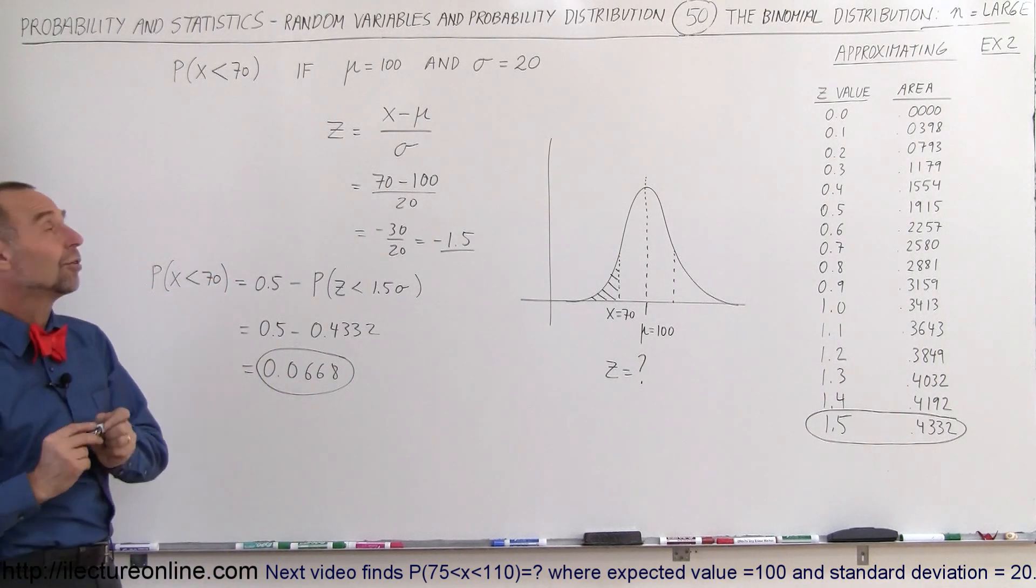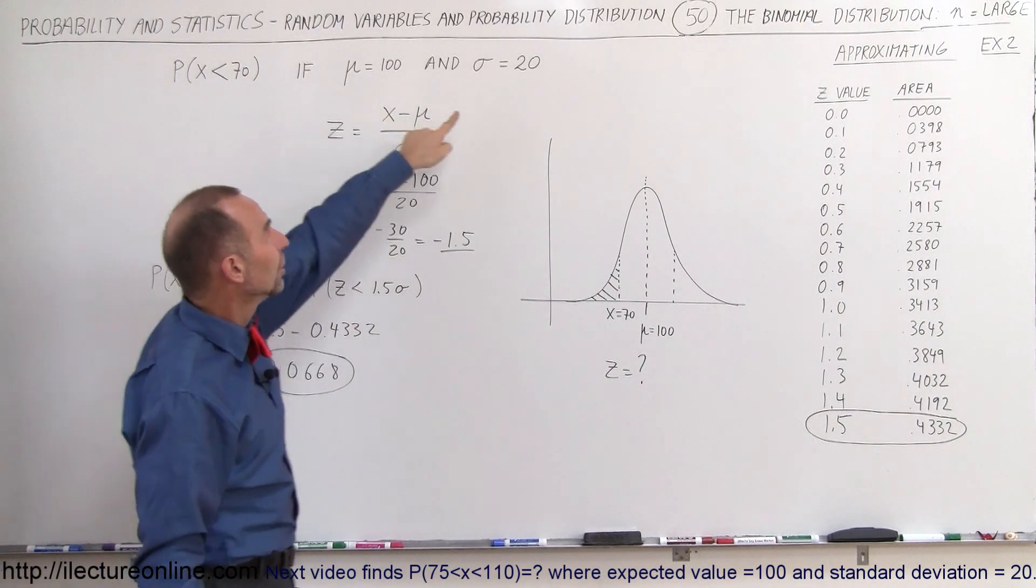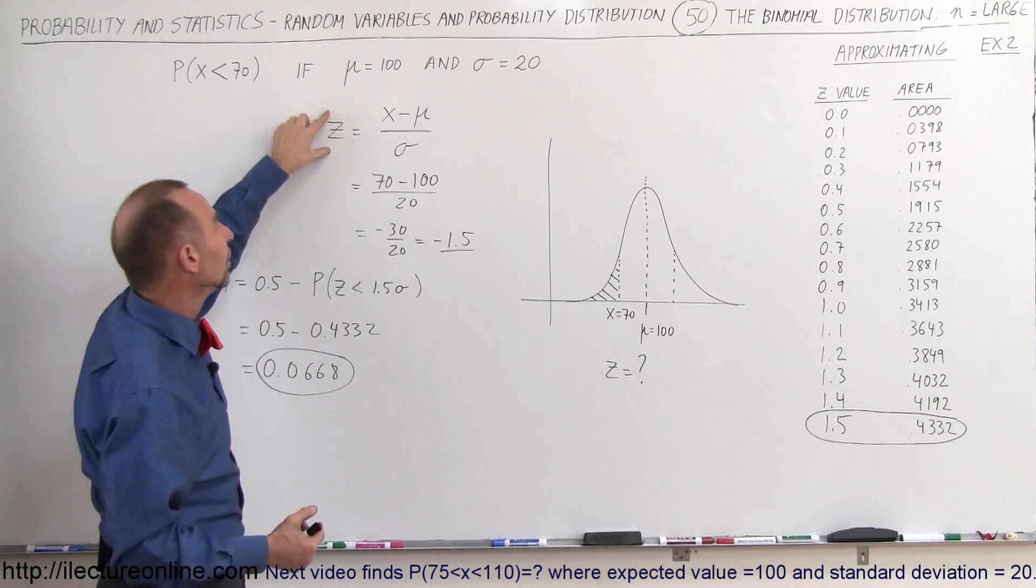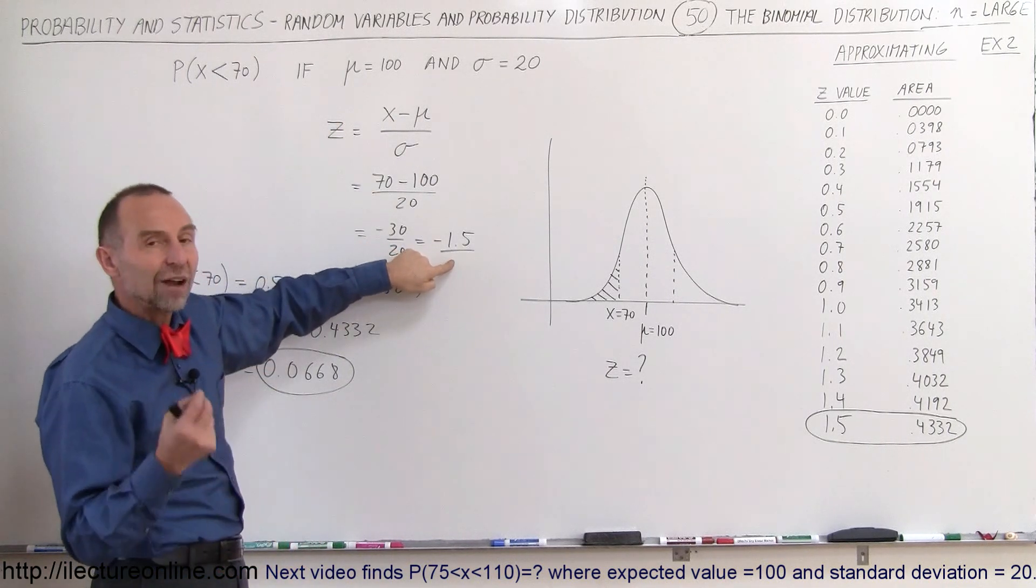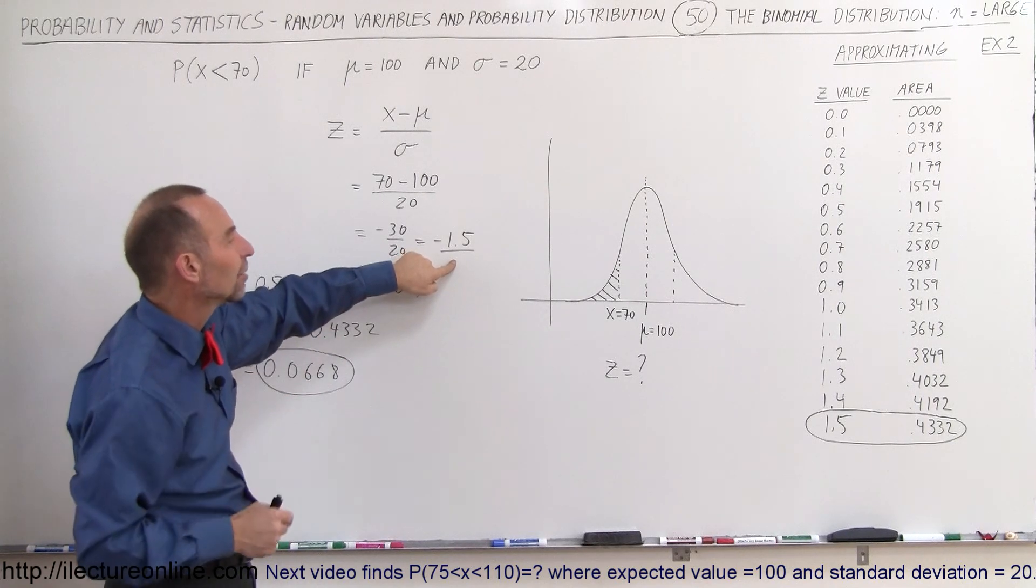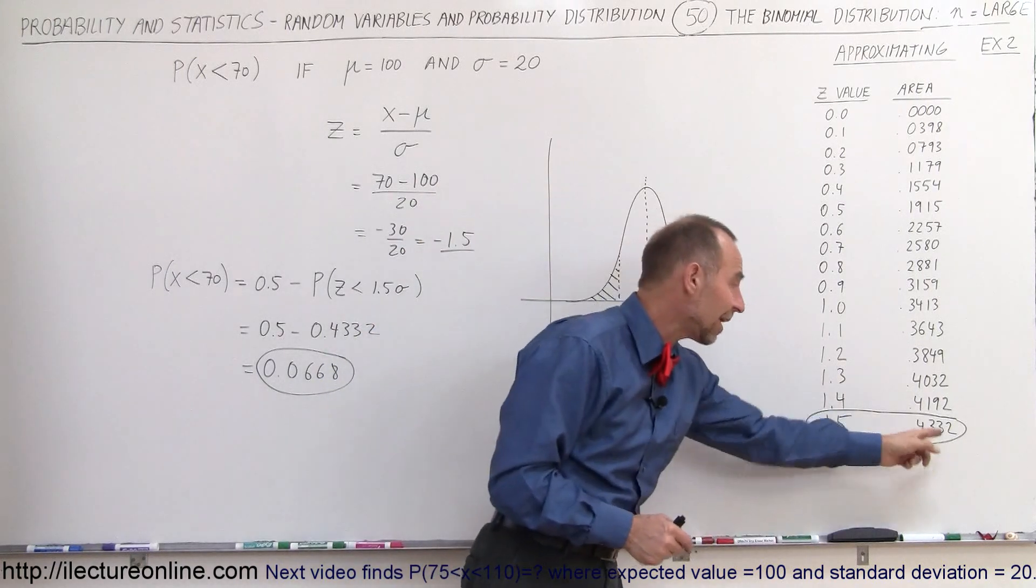And you can see that it's pretty easy to do it that way. Again, find out your expected value, your standard deviation, use that to find the z value. The z value indicates the fraction of sigma that you're away from the mean or from the expected value. You plug that into your table, doesn't matter if it's negative or positive, you get the same value.